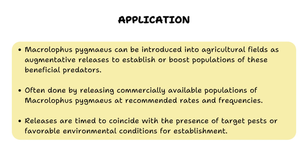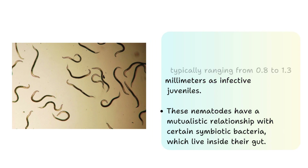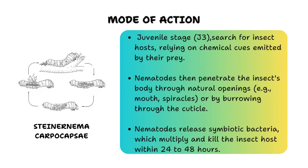The other highly effective and commercially available natural enemy is the nematode Steinernema carpocapsae — specifically Tenanama kapokapsi. It is a roundworm, cylindrical in body, with a length typically ranging from 0.8 to 1.3 millimeters as an infective juvenile. These nematodes have a mutualistic relationship with symbiotic bacteria living inside their gut — it is this bacteria that kills the larvae once released inside Tuta absoluta. The infective stage is juvenile stage three, so when purchasing Tenanama kapokapsi, ensure you are getting juvenile stage three.